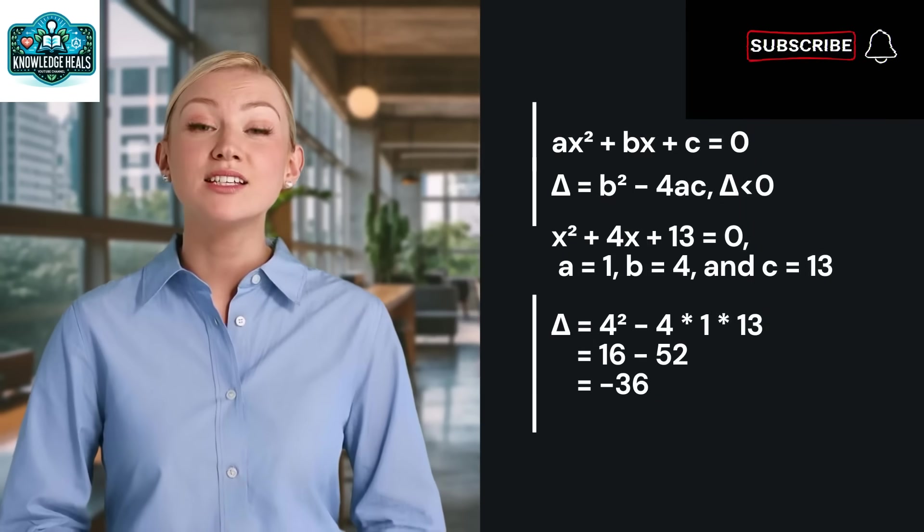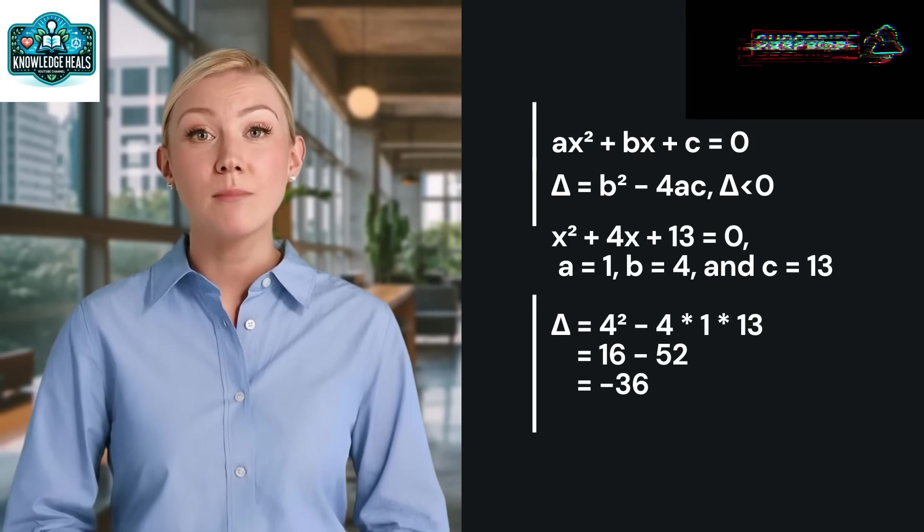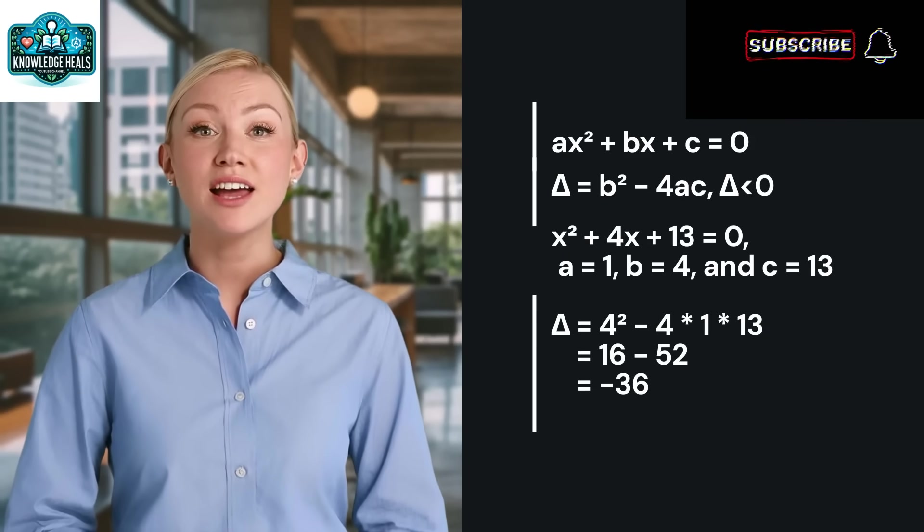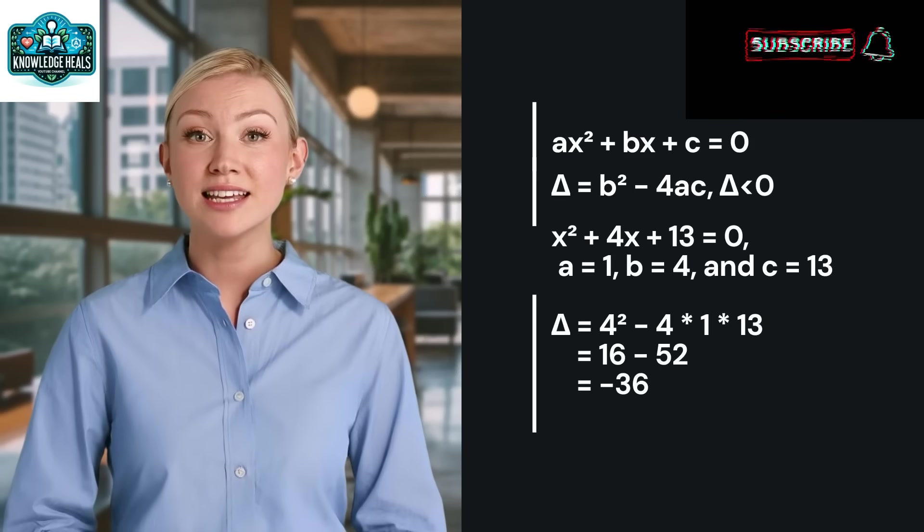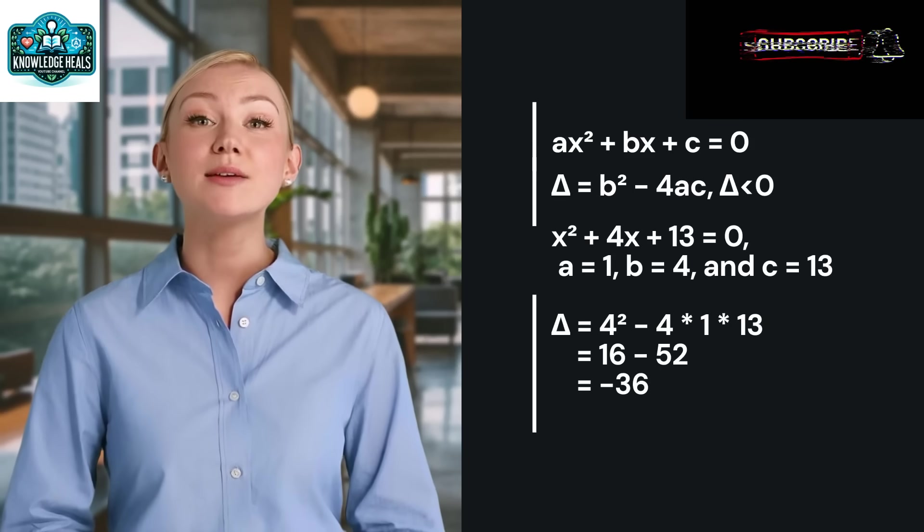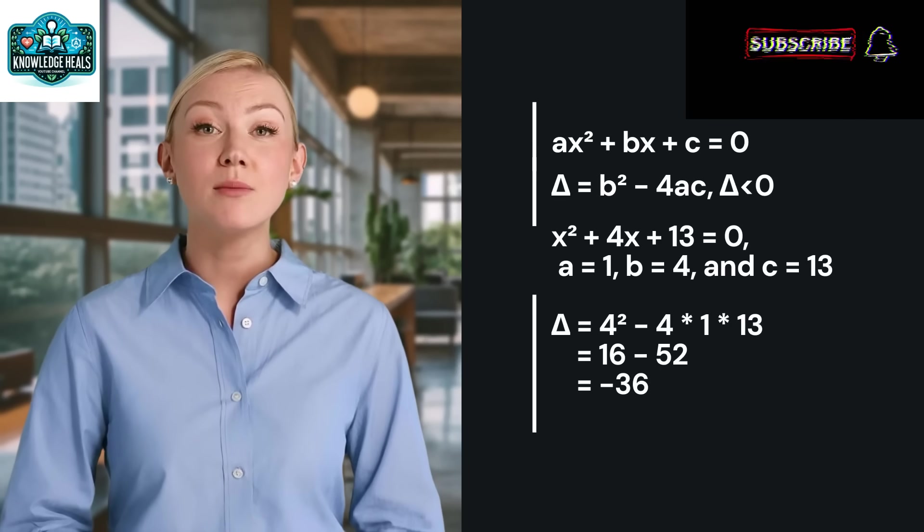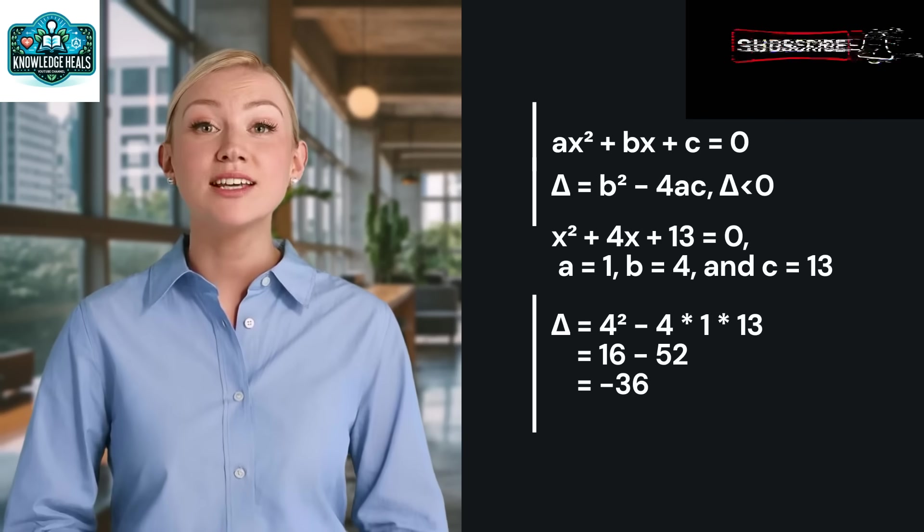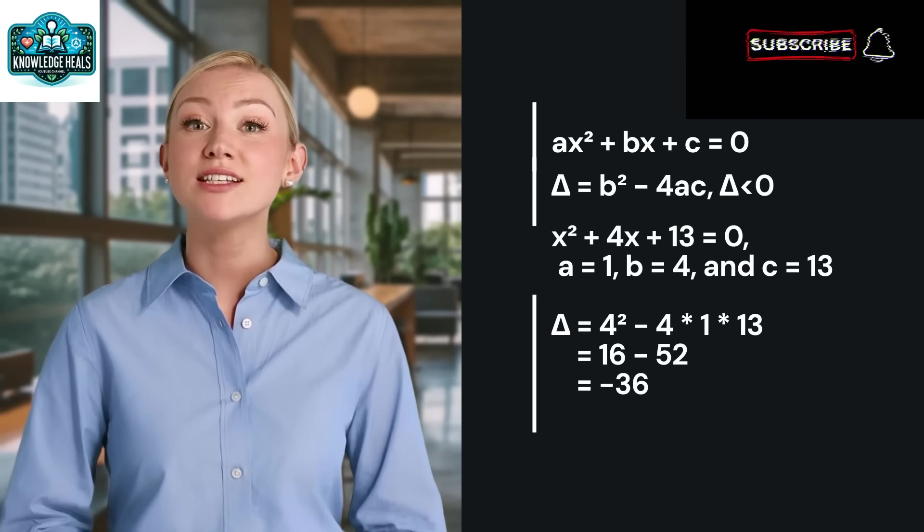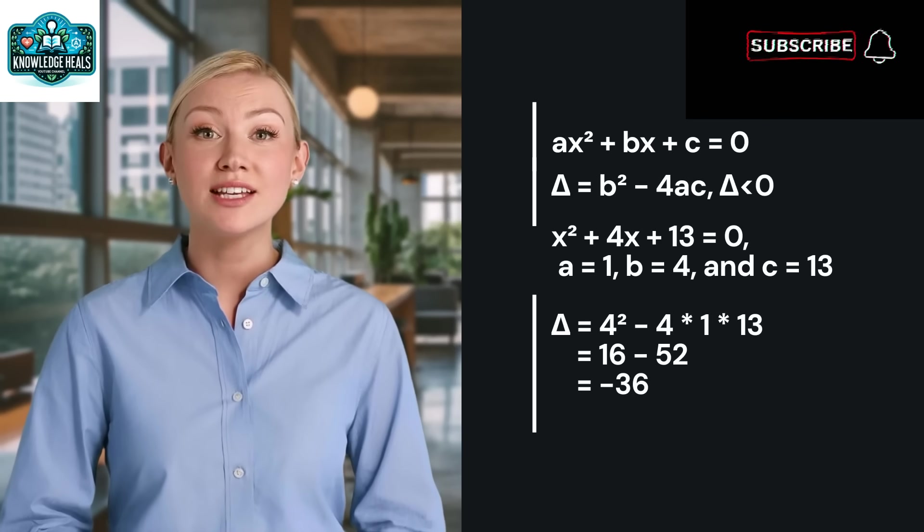Now, let's solve quadratic equations using complex numbers. Consider the quadratic equation Ax square plus Bx plus C equal to 0. The discriminant delta equal to B square minus 4AC determines the nature of the roots. If delta is less than 0, the equation has complex roots.